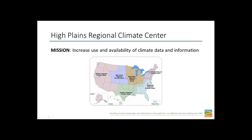For those of you who might be newer to AASC and not familiar with the Regional Climate Center program, Warren and I are from the High Plains Regional Climate Center. We're housed at the School of Natural Resources at the University of Nebraska-Lincoln. We're in the same building as the National Drought Mitigation Center and the Nebraska State Climate Office. We cover the states in purple: Kansas, Nebraska, the Dakotas, Colorado, and Wyoming.